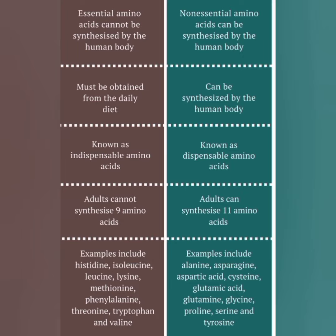Non-essential amino acids can be synthesized by the human body — these are non-dispensable amino acids. Adults can synthesize 11 amino acids. Examples include alanine, aspartic acid, cysteine, glutamic acid, glutamine, glycine, proline, and serine.